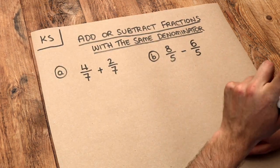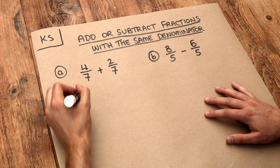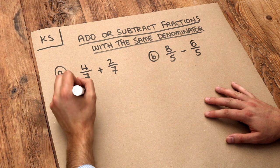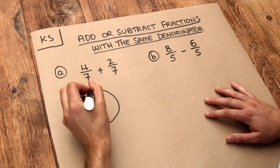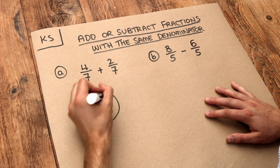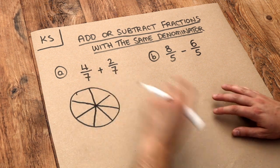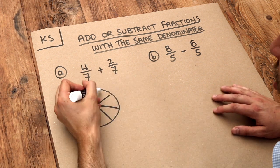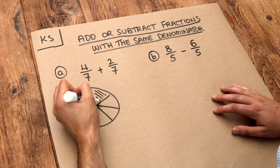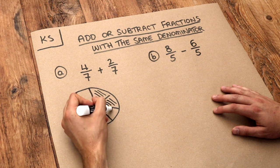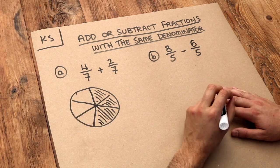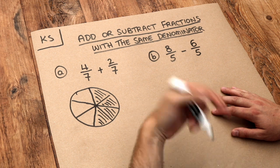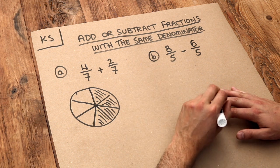We can think about this visually. Four sevenths we can think of as parts of a pizza. So if we divide a pizza into seven, and we want four of those sevenths, let's shade four of those sevenths of the pizza — one, two, three, four. So we've got four of those sevenths; we split it into seven pieces and taken four of those.